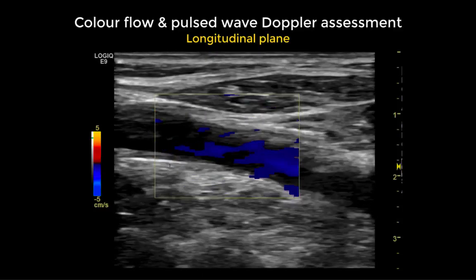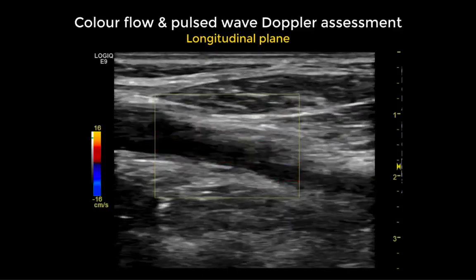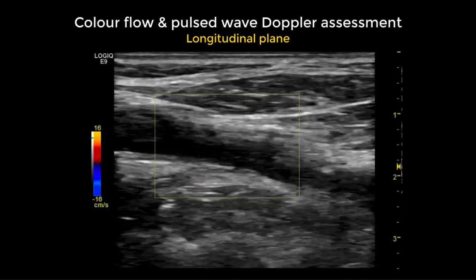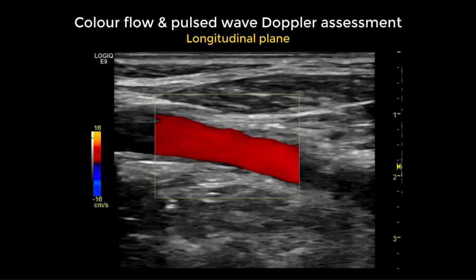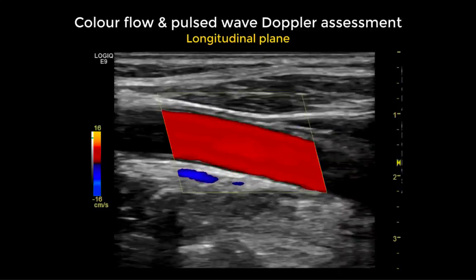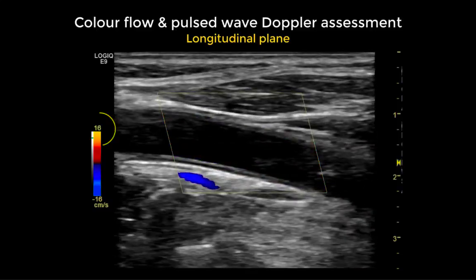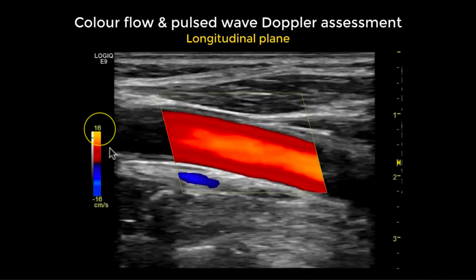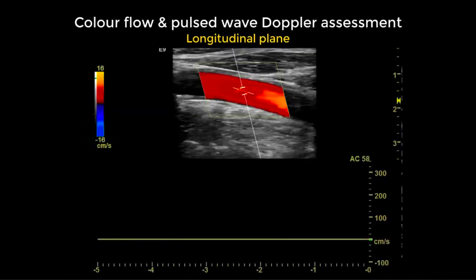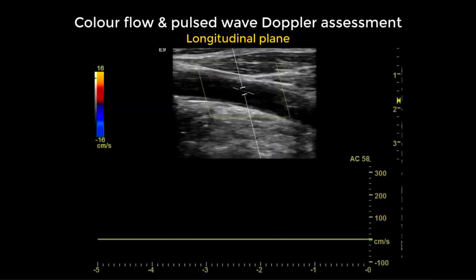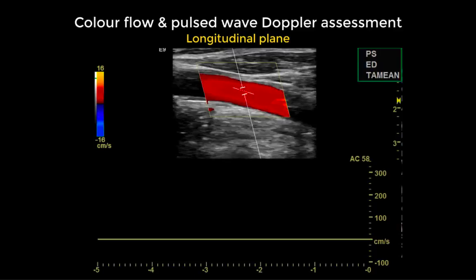We continue the assessment using the longitudinal mode, turning the transducer, optimizing our colour box, steering it parallel to the flow direction. We maintain a very low scale and then apply the pulse wave Doppler.